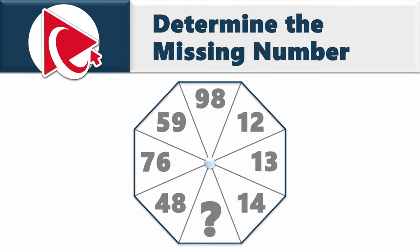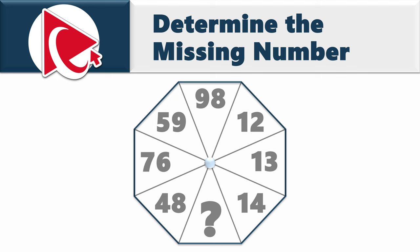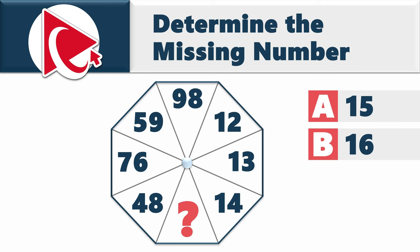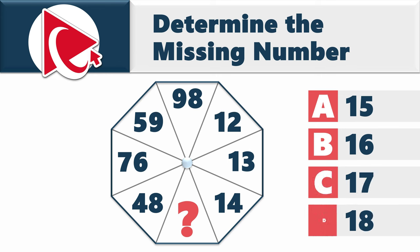You're presented with an octagon that has numbers inside — seven numbers and one missing. The numbers are 48, 76, 59, 98, 12, 13, 14, and then the missing number. Choices: A: 15, B: 16, C: 17, D: 18.